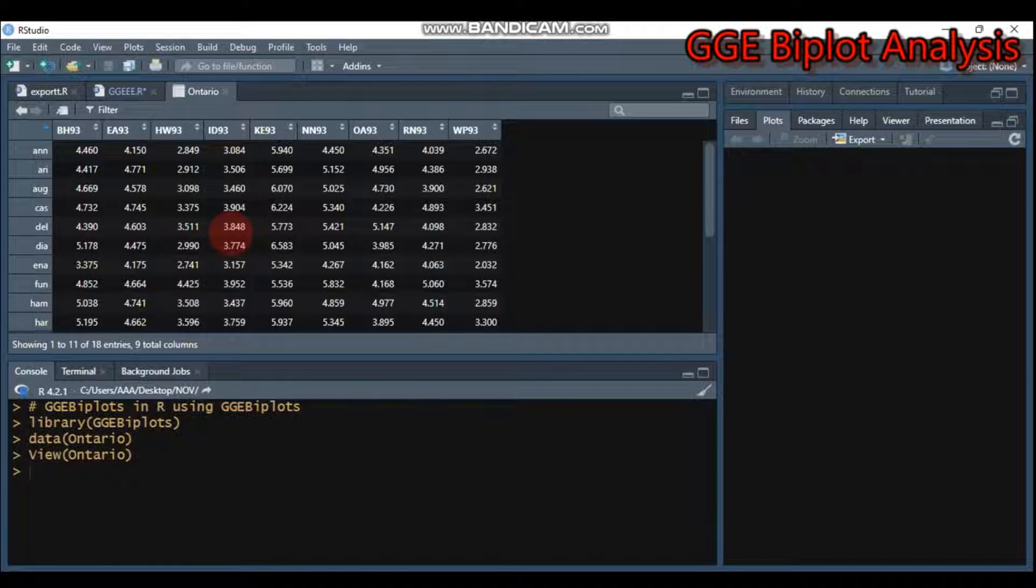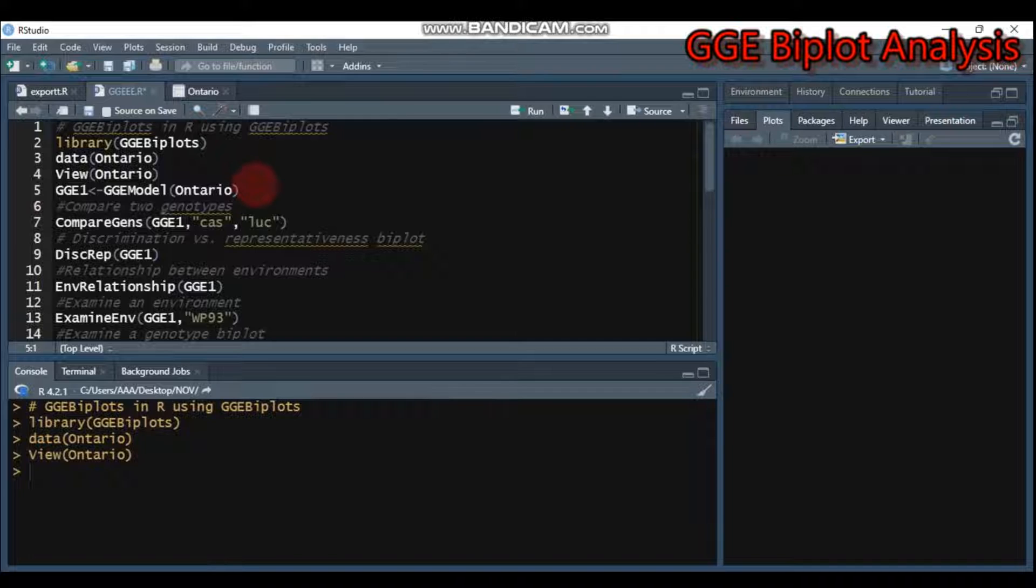The numerical values that you see in these columns are the mean values of the genotypes across different environments. The first step is creating the model using the GGE model function. You have to provide the data immediately in the parenthesis.